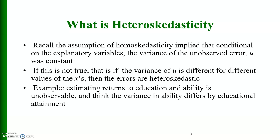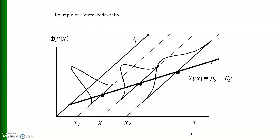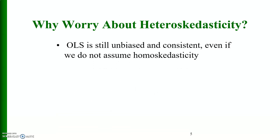Consider the case where the variance in ability differs by educational attainment — this is an example of heteroscedasticity, as the value of x increases so does the variance. If you look at this diagram, along the vertical axis as x varies from x1 up to x3, the variance increases. The expected value of y given x is equal to beta naught plus beta 1 x, but the variance increases.